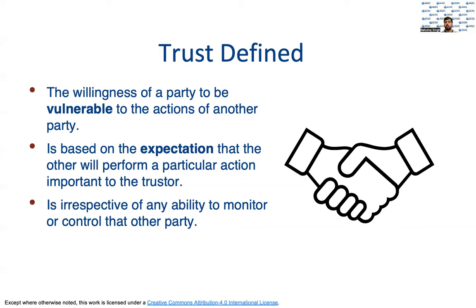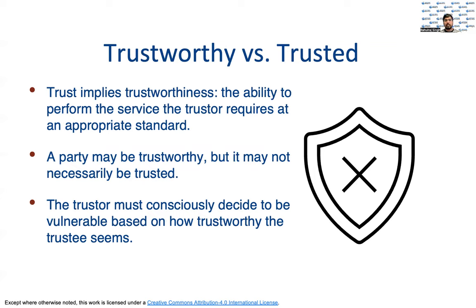In a sense, what they are trying to say is: if you could be sure that the other party will keep its side of the bargain, you don't need to trust. It is when you aren't sure, or don't feel the need to make sure, that trust enters the equation. Now, trust implies trustworthiness. If you trust a party, you believe that they can and will deliver what they are offering. However, there is a difference between being trustworthy and being trusted. Even if you are trustworthy, you may not necessarily be trusted. The truster must consciously decide to be vulnerable to you, and they generally do so based on how trustworthy you seem to be.